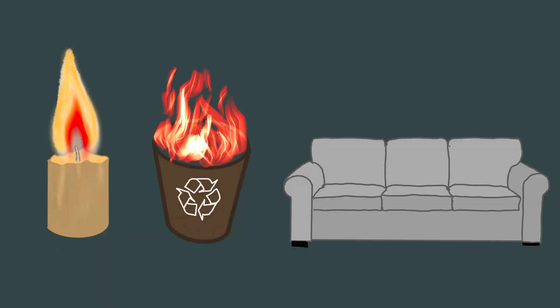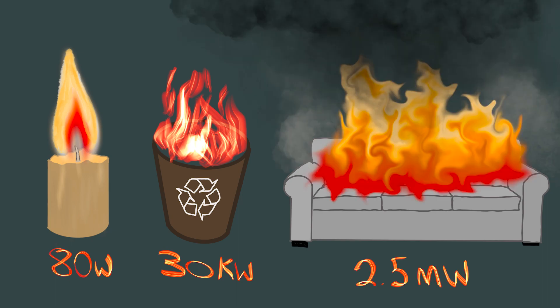So if you take these fuel sources for example, they will all burn with a similar flame temperature. But the candle will release around 80 watts of energy, the rubbish bin will release around 30 kilowatts of energy, the sofa will release around 2.5 megawatts of energy, and a room that has gone through flashover will release in excess of 5 megawatts of energy.